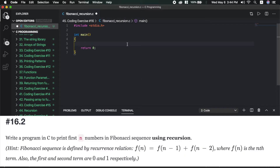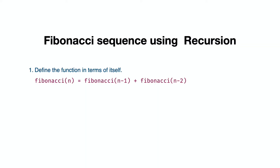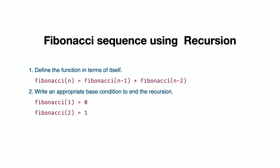The next problem is: print the first n numbers of the Fibonacci sequence. The Fibonacci sequence is defined recursively. The first Fibonacci number is 0 and the second Fibonacci number is 1. Each subsequent term is the sum of the two preceding terms.